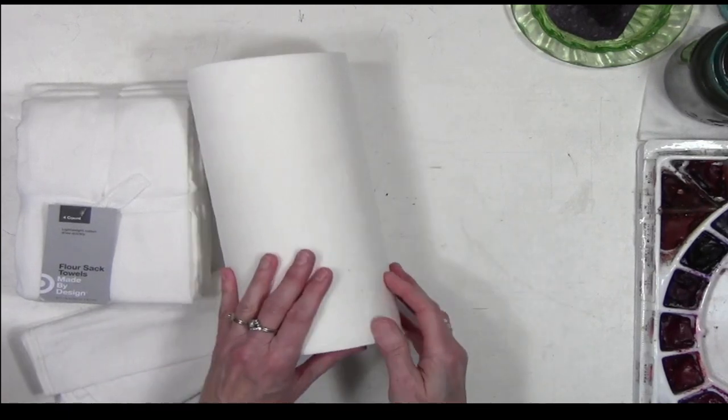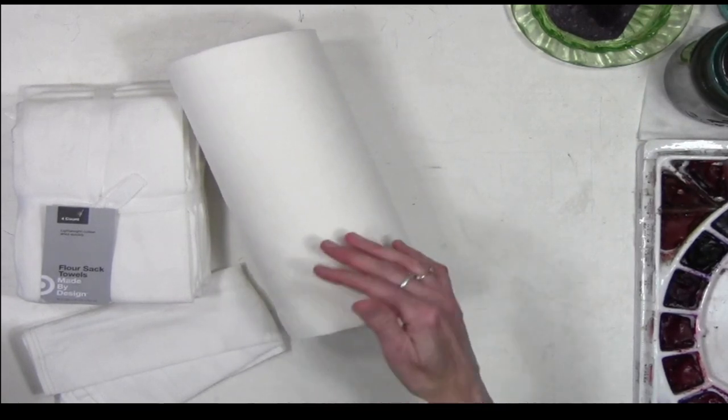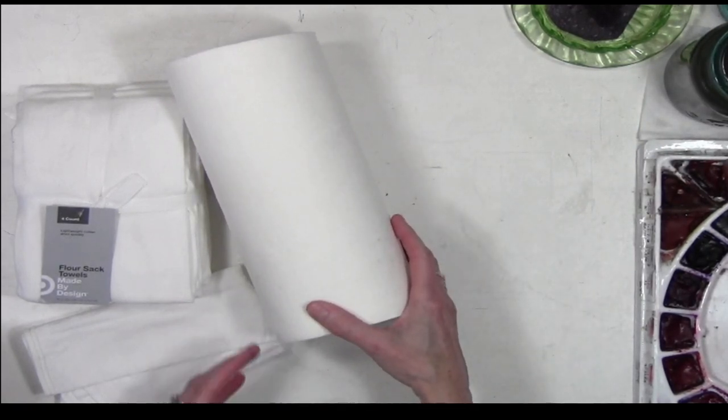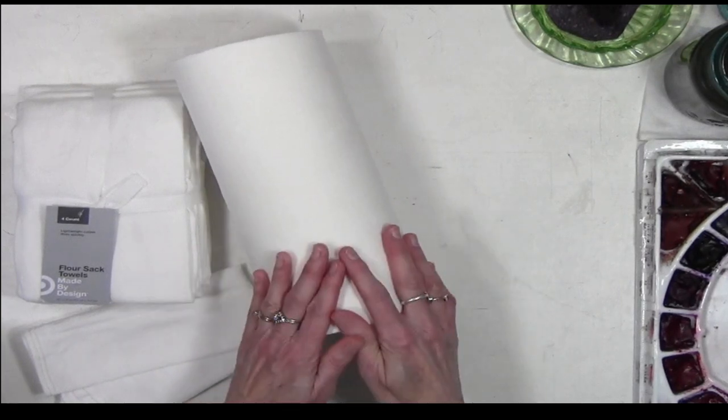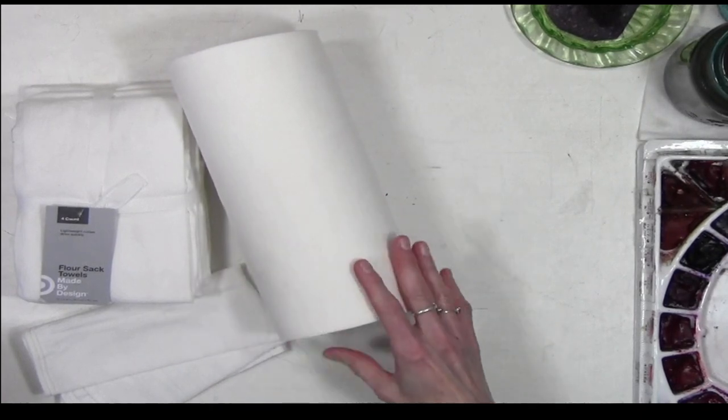I used to use Viva paper towels for my watercolors and really liked them. I like the smooth ones because if I needed to lift some color off of my paper, it wasn't going to leave a mark with a possible pattern that might be on the paper towel, and they absorb really well.